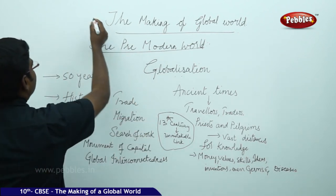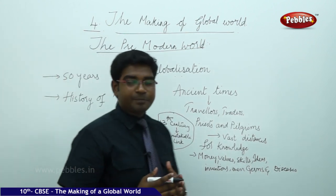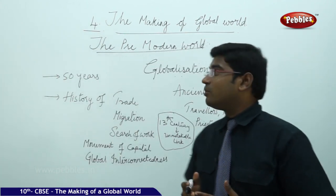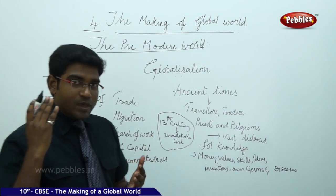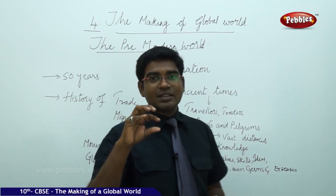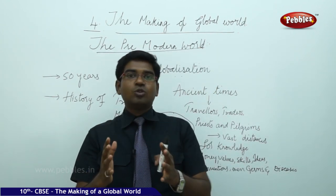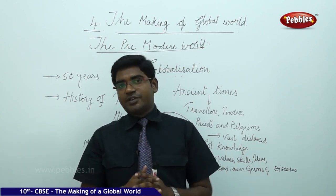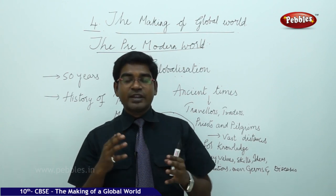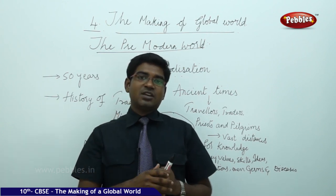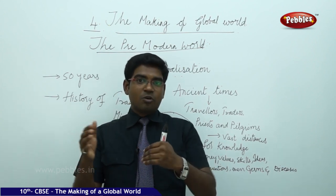Today, we study chapter 4: The Making of Global World. When we talk about globalization or the making of the world, we always think that globalization is connected with economic systems — the growth of the financial system in the past 50 years. But in this unit, we are going to study the various factors present along with the change of the economic system in the modern era.